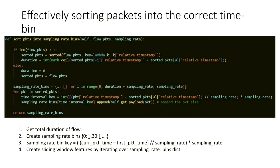One of the key bottlenecks is effectively sorting packets into the correct time bin. A neat approach: first get the total duration of the flow, create the sampling rate bins as key-value pairs, then iterate over the sorted flow packets. To get the time interval, use this formula: take the relative current packet timestamp, minus it by the first packet timestamp in the flow, then floor divide by the sampling rate, and multiply by the sampling rate — this gives you the dictionary key to assign the packet to. This is much faster than iterating over the dictionary to find it. If you're experimenting in research, you want to test different sampling rates to see how that affects detection accuracy.